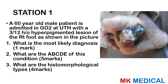Station 1: A 60-year-old male patient is admitted to UTH with a three-month history of a hyperpigmented lesion of the right foot, as shown in the picture. What is the most likely diagnosis? What are the ABCDEs of this condition? What are the histomorphological types?